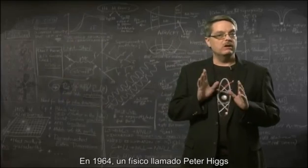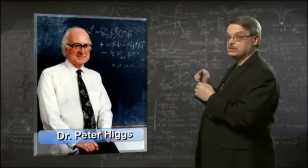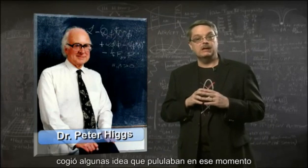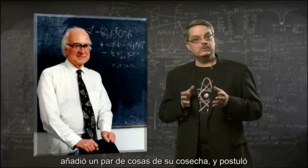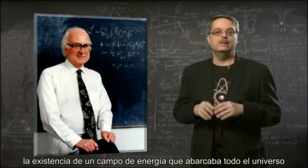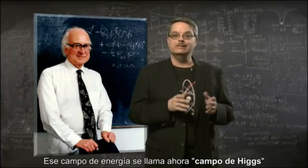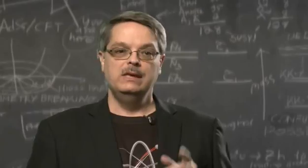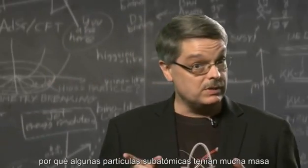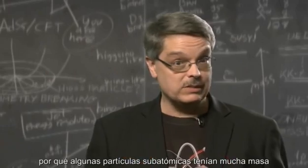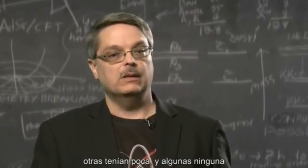In 1964, a physicist by the name of Peter Higgs took some ideas that were floating around at the time, added an insight or two of his own, and proposed that there was an energy field that permeated the entire universe. This energy field is now called the Higgs field. The reason he proposed this field was that nobody understood why some subatomic particles had a great deal of mass, while others had little, and some had none at all.